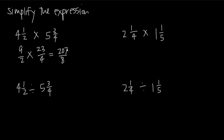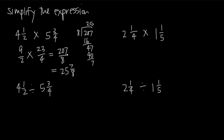We can leave the final answer as an improper fraction, or change it back into a mixed number by dividing 8 into 207. 8 goes into 20 two times; 2 times 8 is 16. Subtracting 16 from 20 gives 4. Bring down the 7: 8 goes into 47 five times; 5 times 8 is 40, and the remainder is 7. Since 7 is less than 8, we're done. So 207 over 8 equals 25 and 7 eighths.